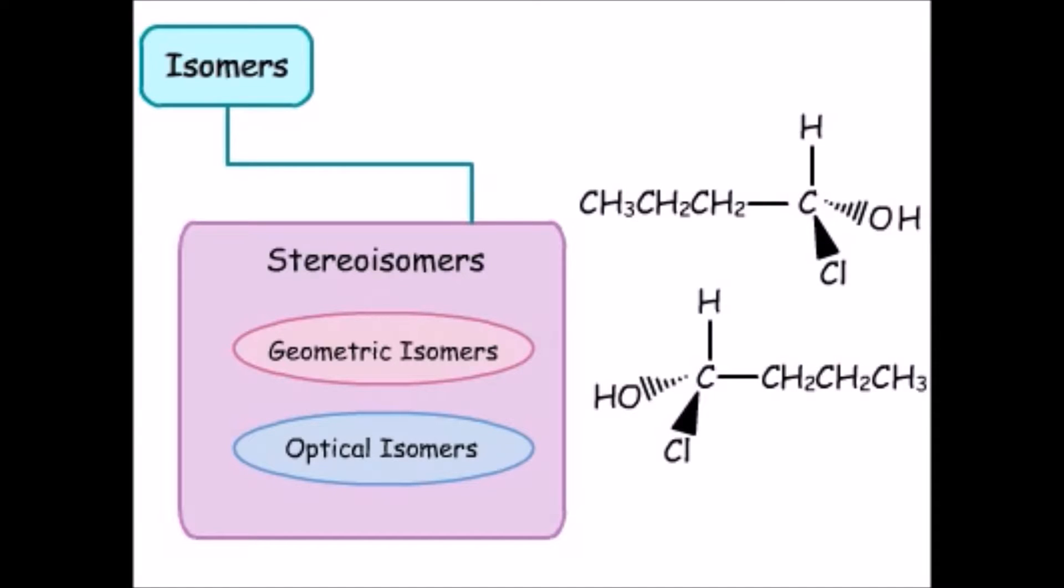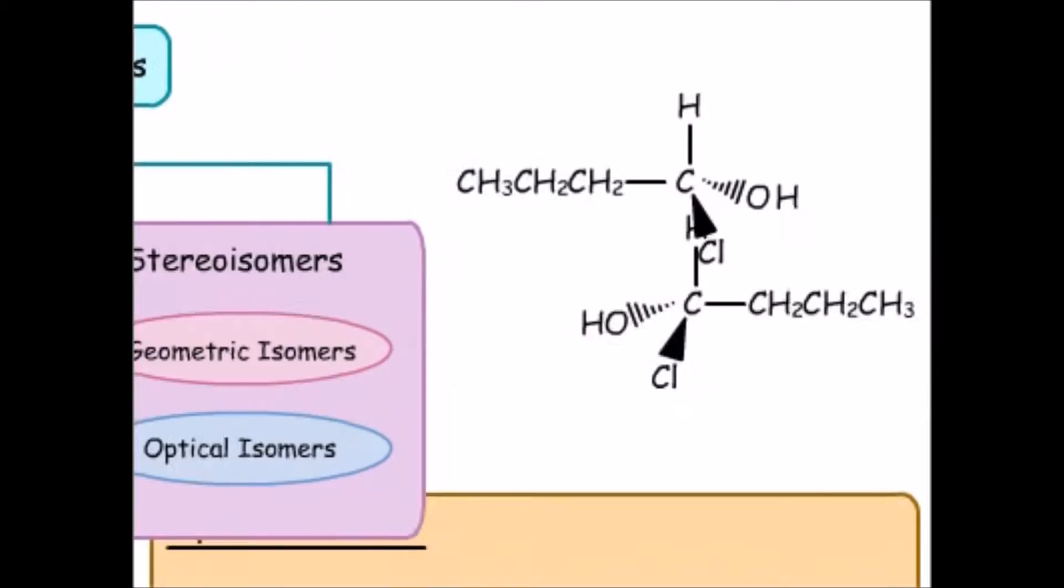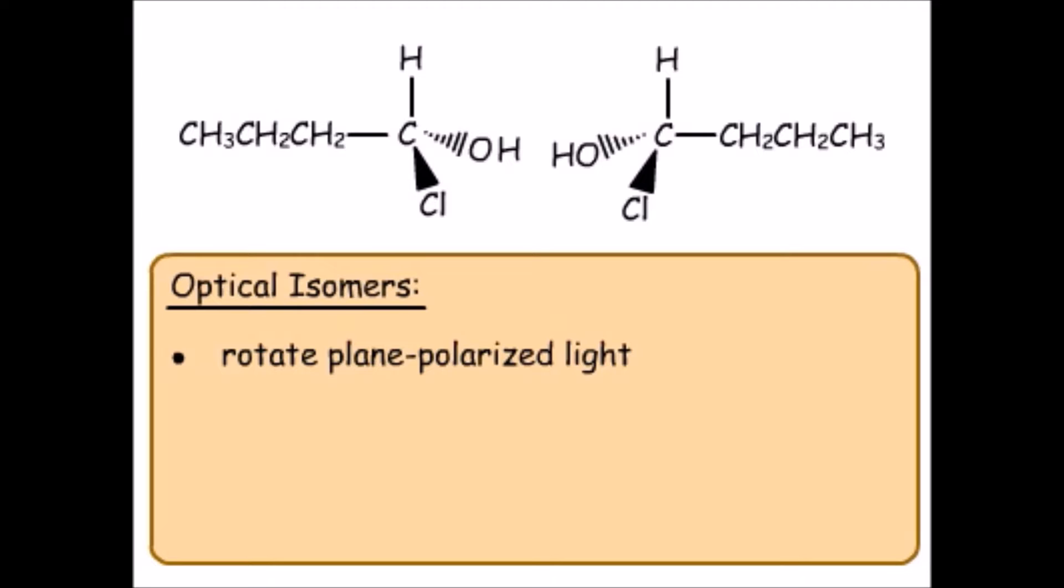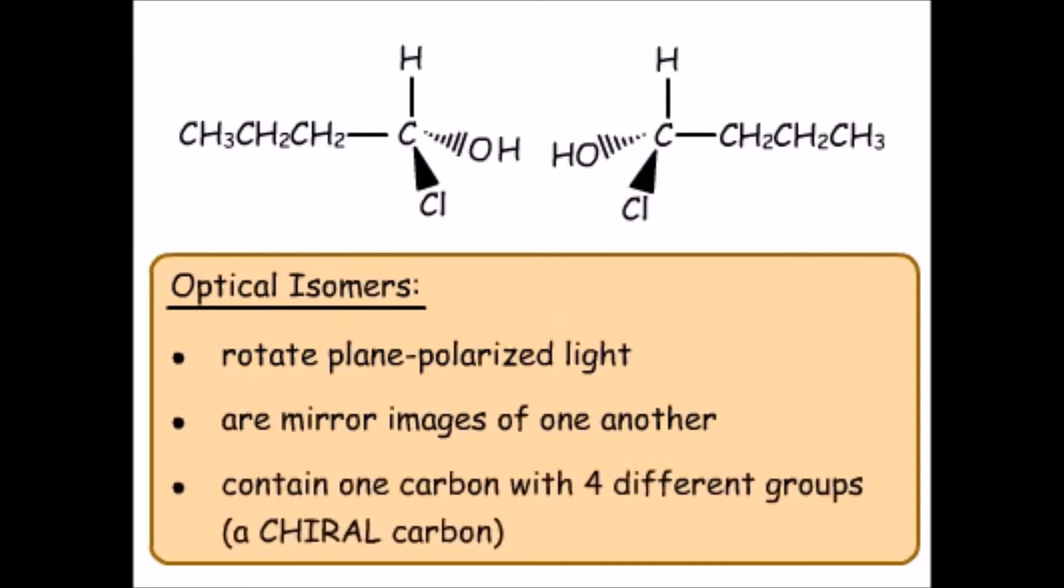Finally, we looked at optical isomers, which have the ability to rotate plane polarized light. The type we looked at are mirror images of one another. This is because they contain at least one carbon with four different groups on it, giving a handedness that we call chirality.